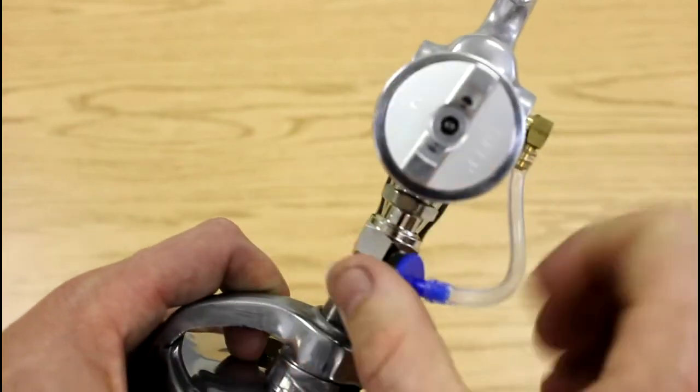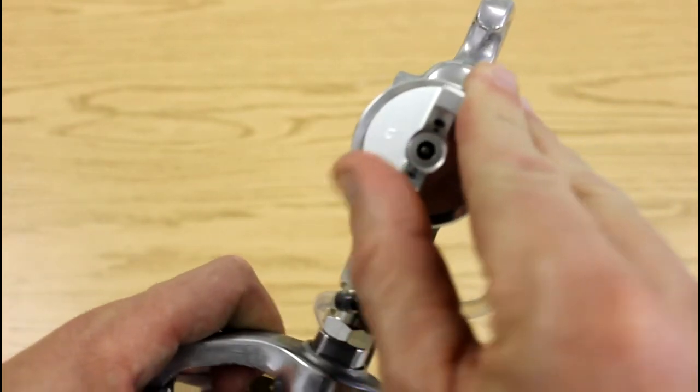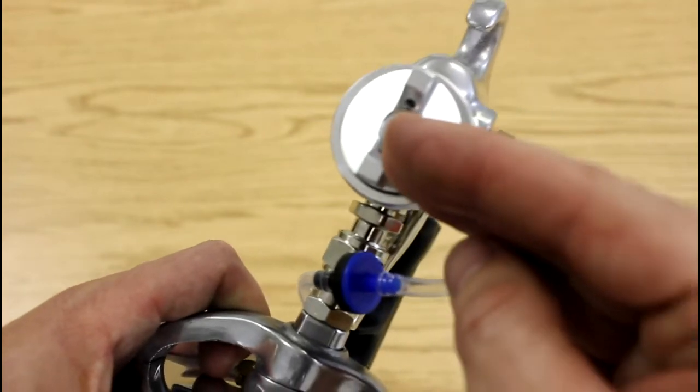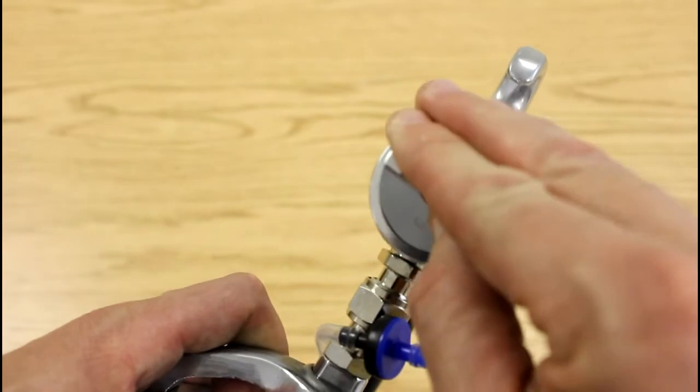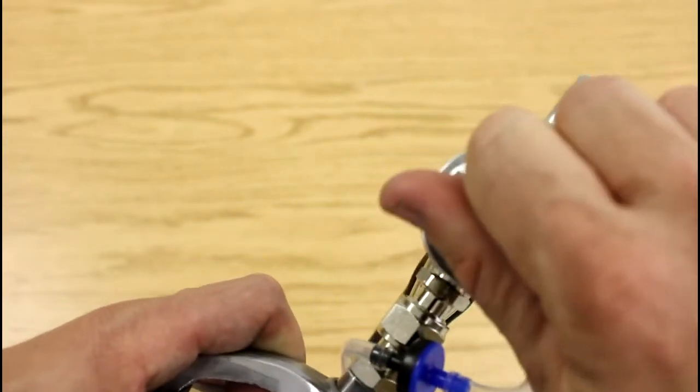And then we can turn it to the vertical position. This is going to give us a horizontal spray fan. Again, this is good for up and down spraying. That's kind of the air cap and its functions.